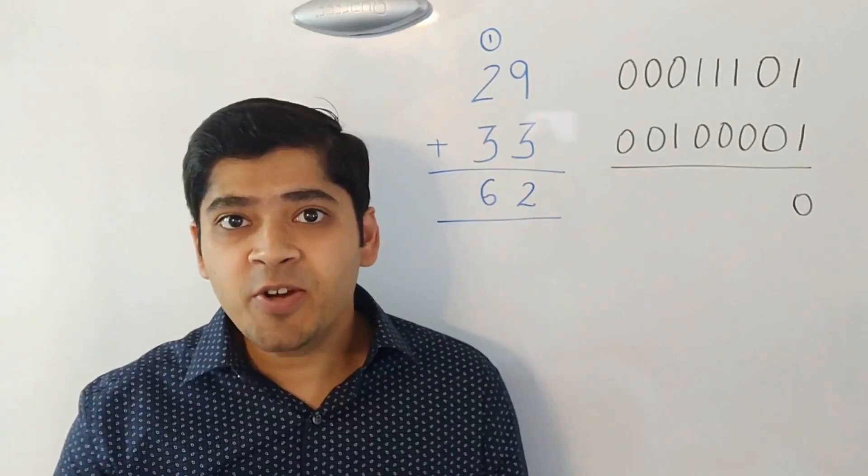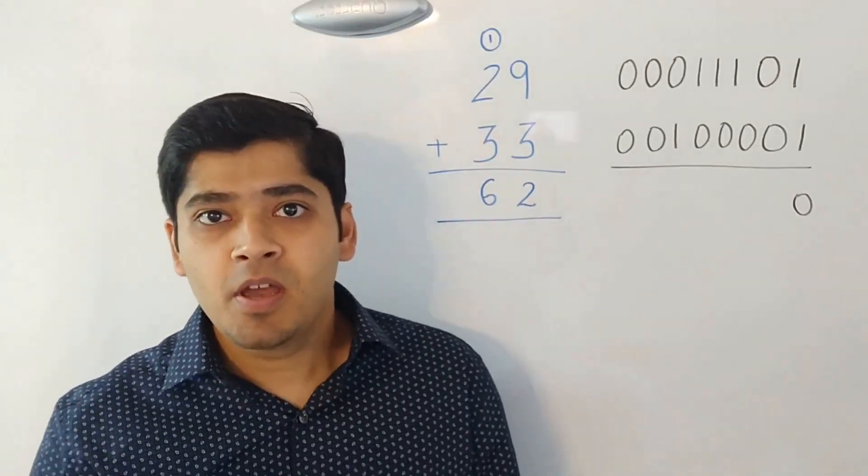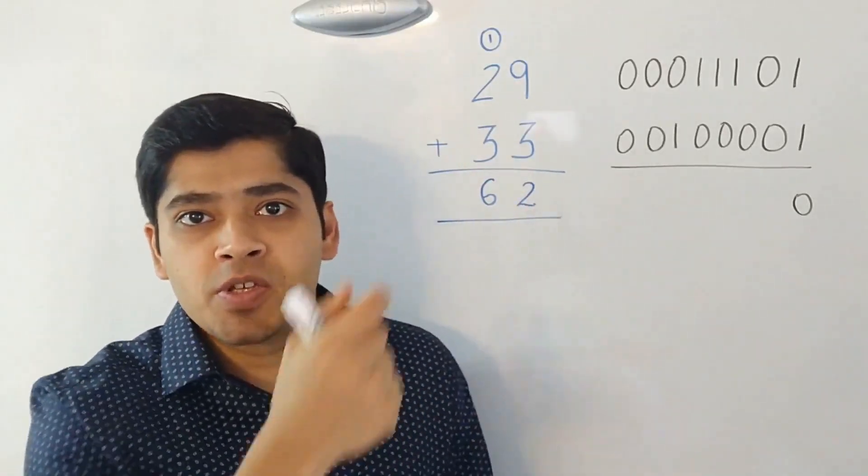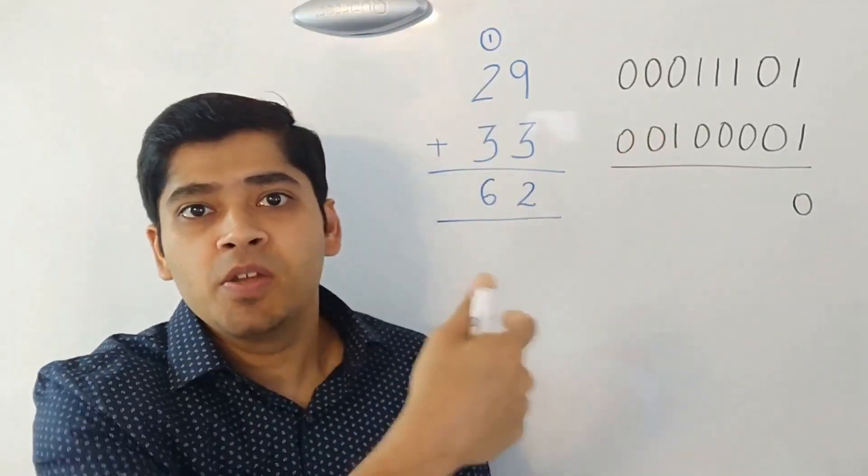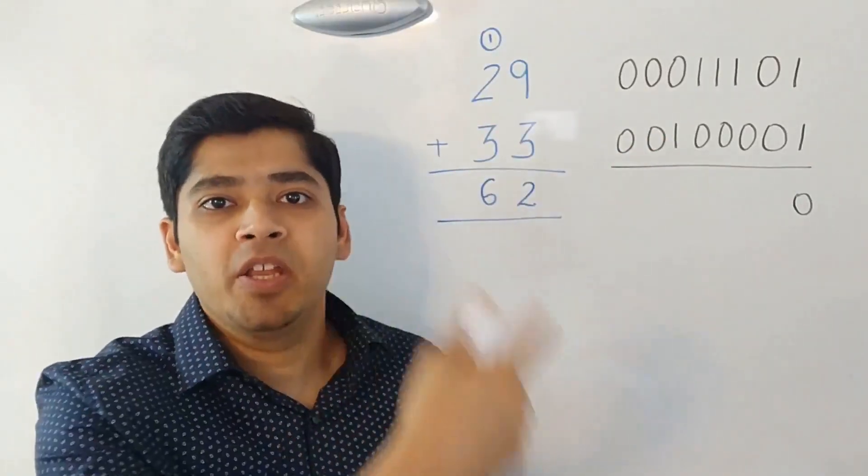Next, let's try to do the same thing in binary. What happens? At the very first bit, you start from right to left. So you have 1 and 1. You sum them up. 1 and 1, it becomes 0 and then you will carry over a 1.